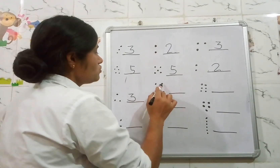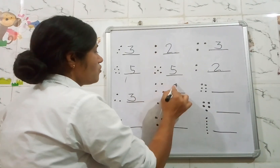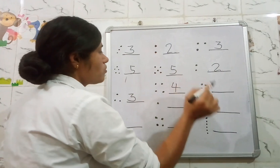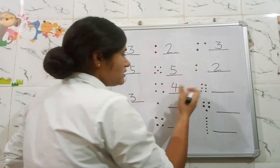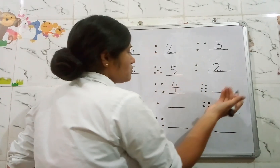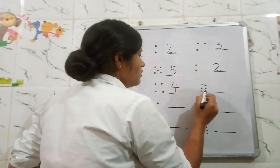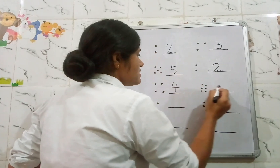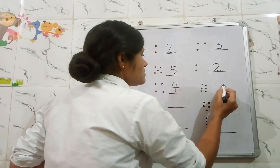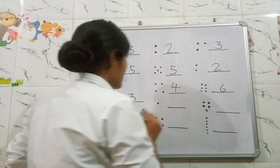1, 2, 3, 4. That's 4. Count karte jaiye, write down karte jaiye. Now count: 1, 2, 3, 4, 5, 6. That's 6. We will write here 6.